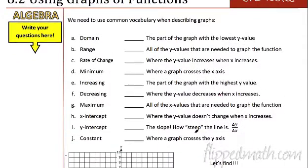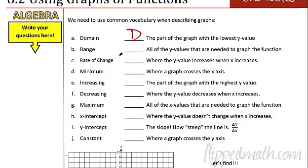All right, we're going to start with a lot of vocabulary words. We already know what these things are — for the most part, it's review. So what I want you to do is pause the video and fill out these. I'll do the first one for you. The part of the graph with the lowest y value — that's the minimum. So I'm going to put a D right there. Fill that list out. Pause the video. Go.